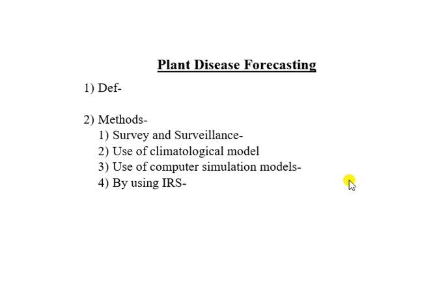Plant disease forecasting involves all the activities in asserting and notifying the farmers in a community that conditions are sufficiently favorable for certain diseases, that applicable application of control measures will result in economy gain, or the amount of disease expected is unlikely to be enough for justifying the expenditure of time, energy, and money for the control.